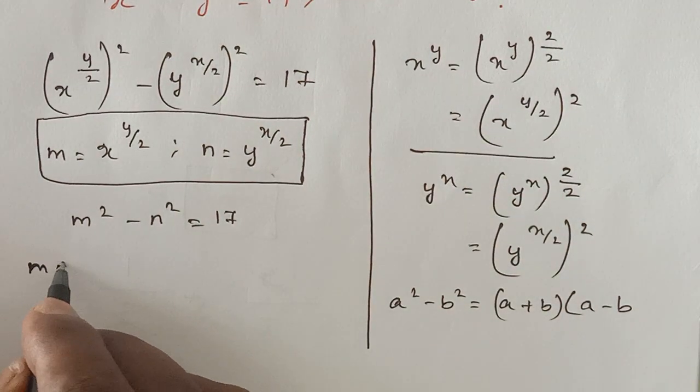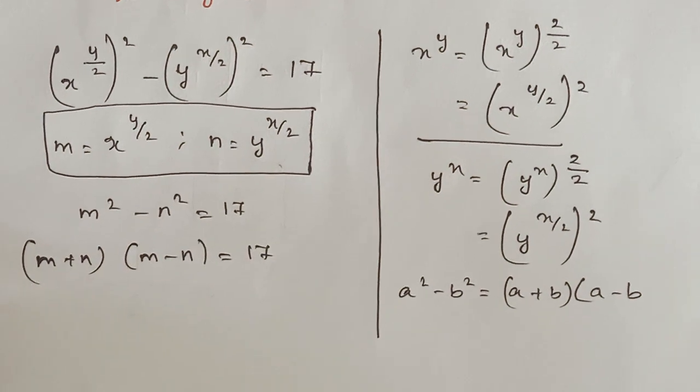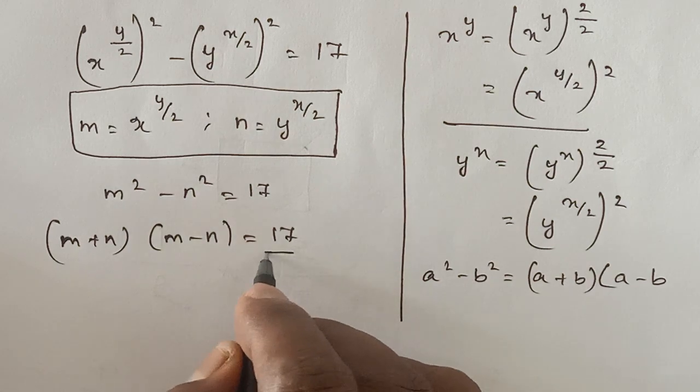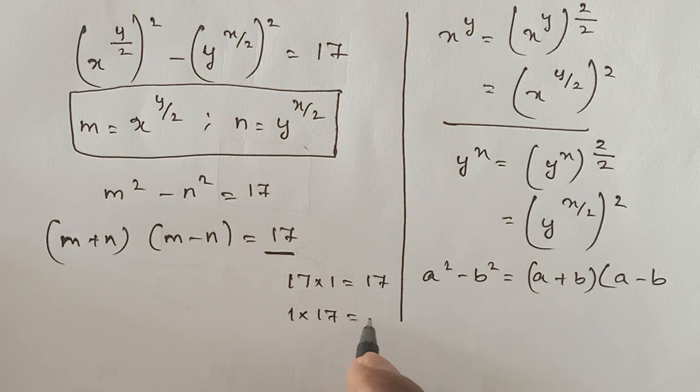So (m+n)(m-n) is equal to 17. See here, this 17 we can write like 17 times 1 is 17, or 1 times 17 is 17.